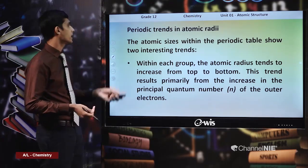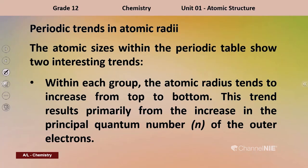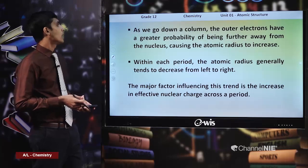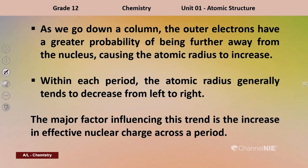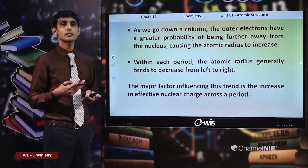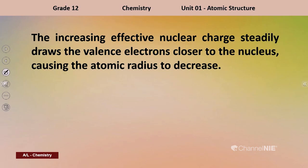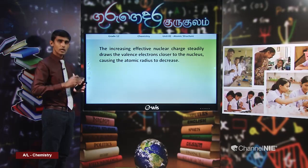When it comes to periodic trends of atomic radii, within each group the atomic radius tends to increase from top to bottom, mainly due to the increase in the principal quantum number of the outer electrons. Within each period, the atomic radius generally decreases from left to right. The major factor influencing this trend is the increase in effective nuclear charge — as effective nuclear charge increases, valence electrons are more strongly drawn towards the nucleus, decreasing the atomic size.